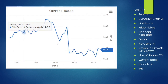From a short-term liquidity perspective, the current ratio is close to 1, which is not bad. Basically, whatever their expenditure is, they are able to cover it with their cash and short-term assets.